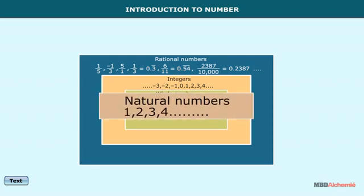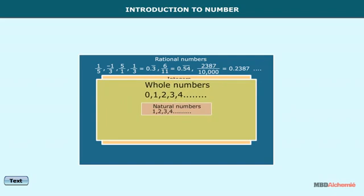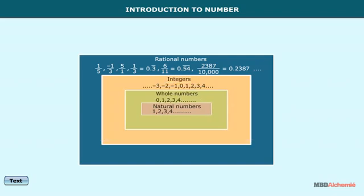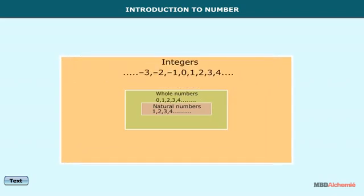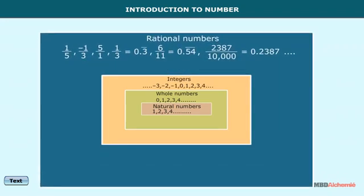So, we can conclude that all natural numbers are included in whole numbers and all whole numbers are included in integers and all integers are included in rational numbers.